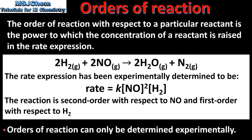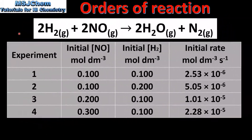Next we look at some examples of how orders of reaction can be determined from experimental data. To do this we use the initial rates method. We have data from 4 different experiments: the initial concentration of nitrogen monoxide, the initial concentration of hydrogen, and the initial rate of reaction. The initial concentration of one reactant is changed to determine the effect on the rate of reaction.